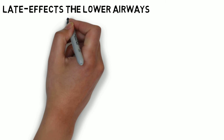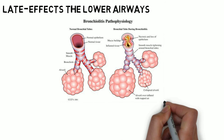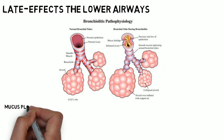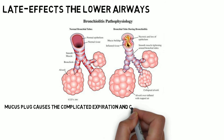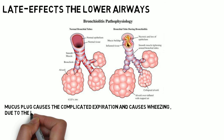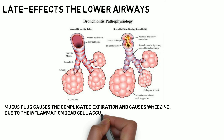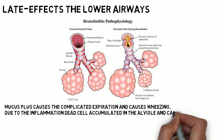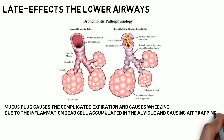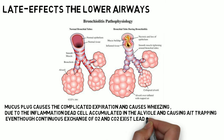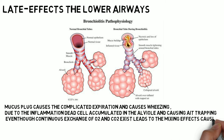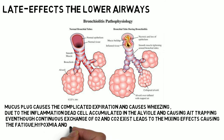In the late stage, due to inflammation, secretion of mucus takes place in the bronchioles, causing mucus plugging. Dead cells accumulate in the alveoli and cause air trapping. Even with air trapping, exchange of O2 and CO2 between capillaries and alveoli is impaired, causing mixing of CO2 and O2 in the alveoli, which leads to hypoxemia, fatigue, and lethargy.